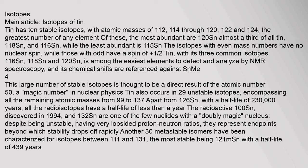The radioactive 100Sn, discovered in 1994, and 132Sn are among the few nuclides with a doubly magic nucleus. Despite being unstable and having very lopsided proton-neutron ratios, they represent endpoints beyond which stability drops off rapidly. Another 30 metastable isomers have been characterized for isotopes between 111 and 131, the most stable being 121mSn with a half-life of 439 years.